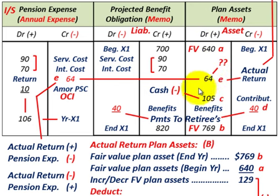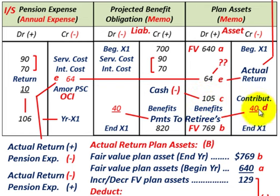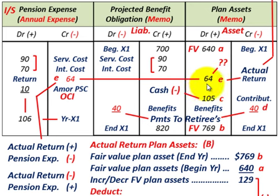If you were given your numbers, you could look at the debits and credits, but you'd have to look at whatever is being contributed to your plan assets and whatever benefits are being paid out of your plan assets. Then you'd have to determine the fair value of the beginning versus the fair value at the end, and from that you could determine your actual return on your plan assets.